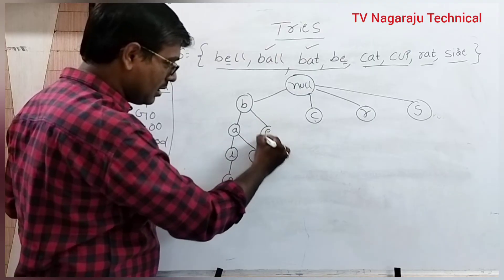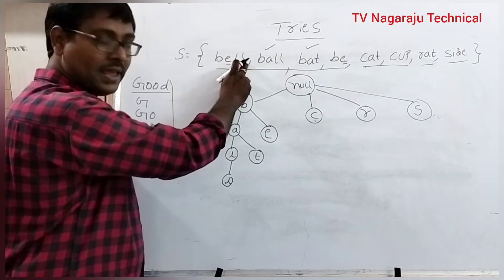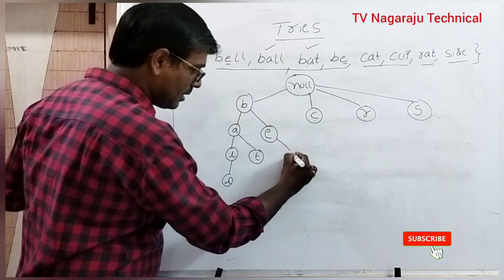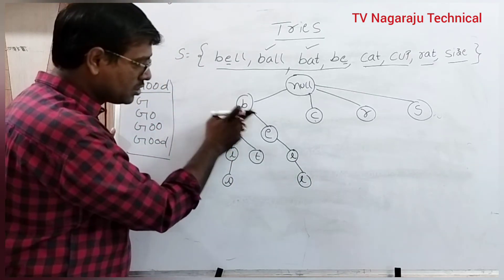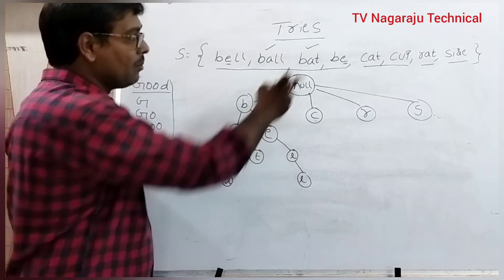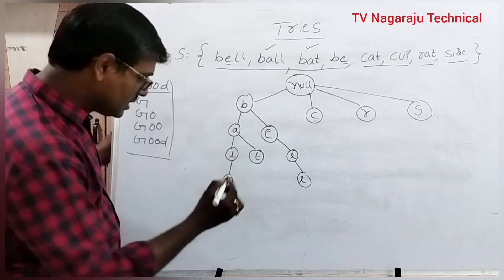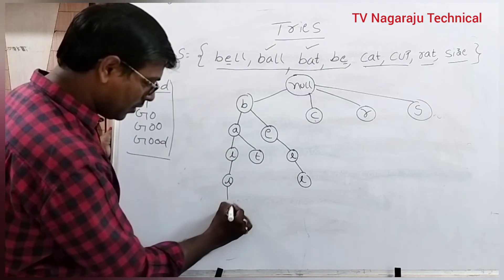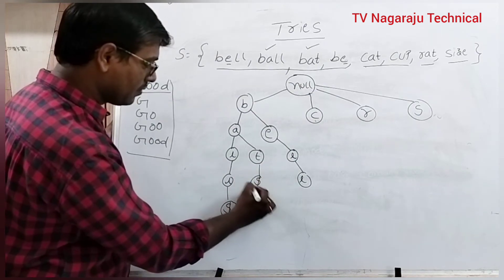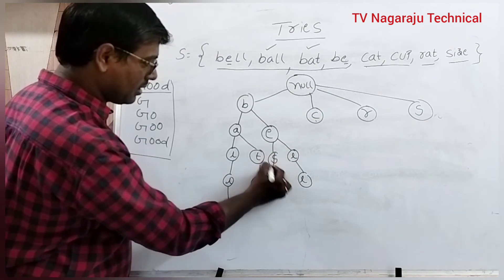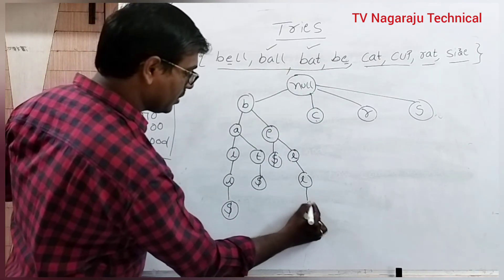Then B-E-L-L — this is the only character remaining. Now observe carefully: we have B-E-L-L, but what about B-E? For this type of situation, a string is ended with a dollar sign. If you write dollar, that is the end of a string. So B-E ends with dollar, B-E-L-L ends with dollar. The four B strings are completed.